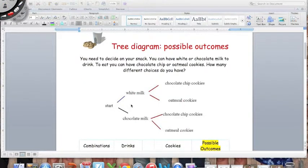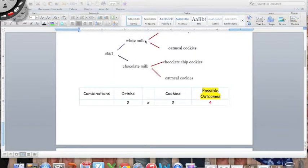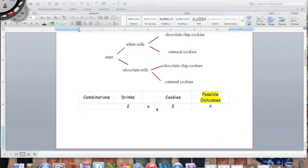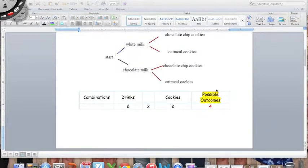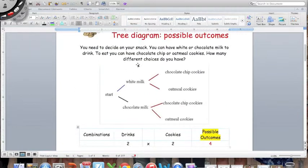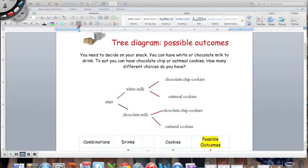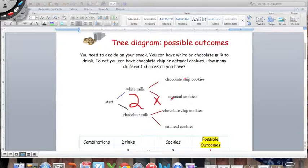Let me show you a very common error that a lot of people make. Most people would start to count everything here. They'd say one, two, three, four, five, six combinations. What did they do wrong there? If you just counted up every single thing that you listed in your tree diagram, you weren't really thinking about the combinations. For this particular tree diagram you have two possible drinks, two cookie choices, four possible outcomes.